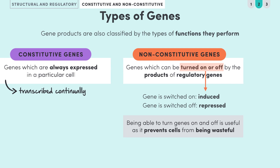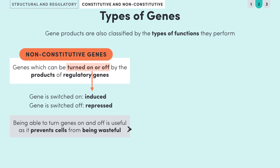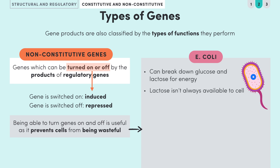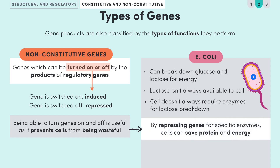For example, E. coli metabolizes simple sugars like glucose and lactose as a source of energy. However, lactose isn't always available, so E. coli cells do not always need to produce enzymes for breaking down lactose. By repressing the genes for these enzymes when lactose isn't around, E. coli cells can save protein and energy.